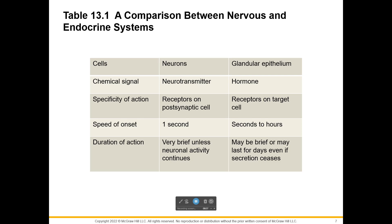Neurons are always communicating with the cell after the synapse — whether another neuron, a gland, or a muscle — where the glandular epithelium, the endocrine, is looking for a target cell. While the hormone is going everywhere in the body, only cells with receptors for that chemical are going to understand the communication. We call those cells target cells. Neurons take less than a second, where releasing a hormone and having it travel to where it needs to go can take anywhere from a few seconds to a few hours. Think about adrenaline — that happens pretty quickly.